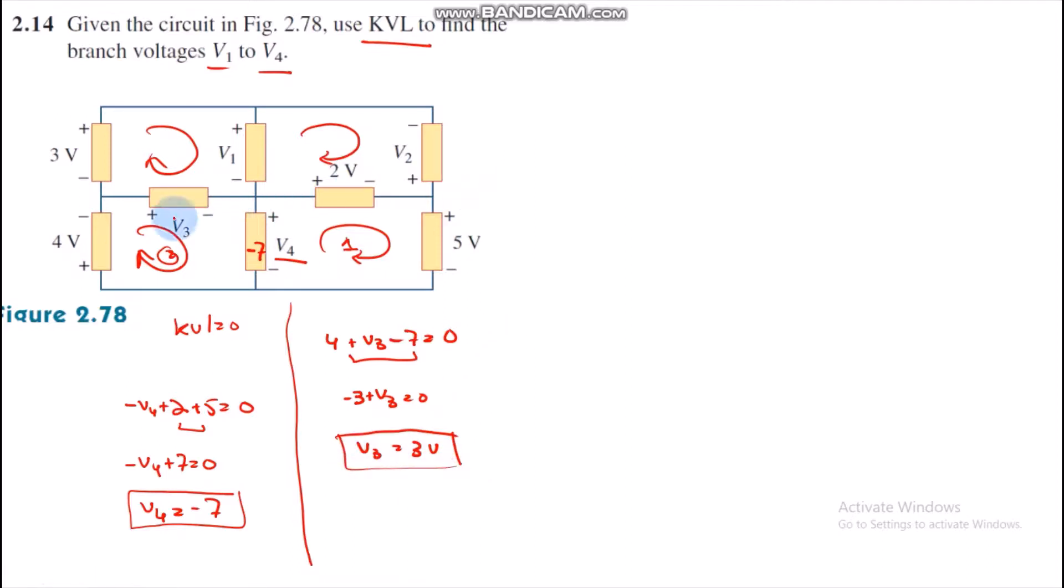We have calculated V3 as 3. In order to find V1, we are going to apply KVL in this loop. Then, which is minus 3, the battery voltage. And we have calculated V3, which is minus 3.